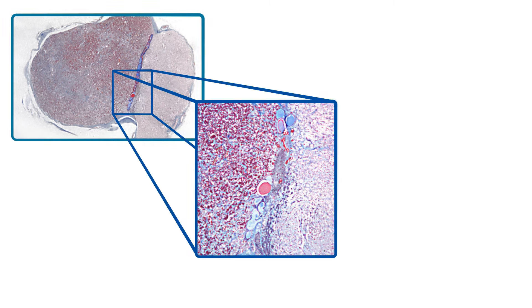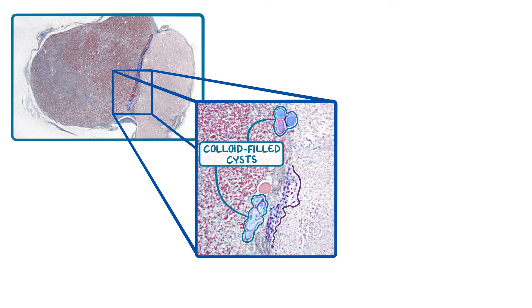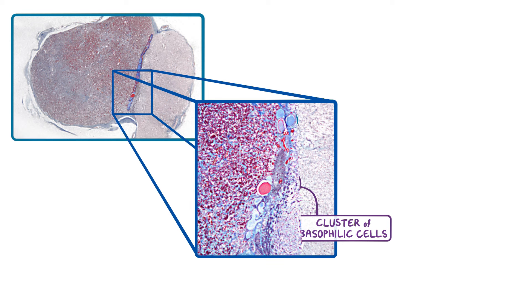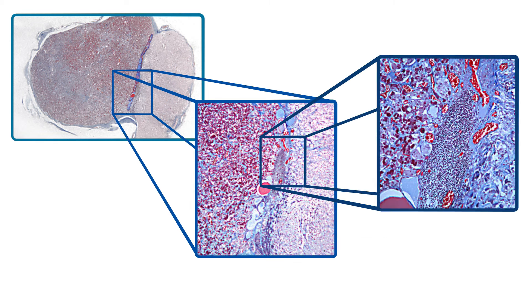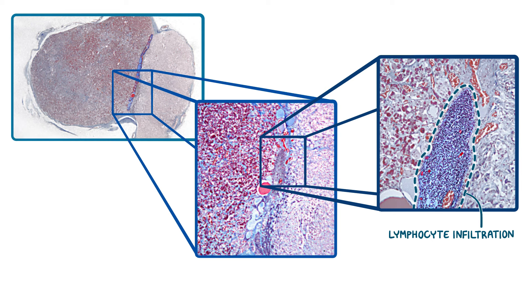Zooming in closer to the pars intermedia, the colloid-filled cysts can be seen more clearly, along with irregular clusters of basophilic cells that often invade the neighboring neurohypophysis as well. Looking even closer, we can see a portion of the pars intermedia that has an area of lymphocyte infiltration. It's also easier to see that the adenohypophysis has a much richer blood supply compared to the neurohypophysis, with many small blood vessels present throughout the adenohypophysis, including the pars intermedia.